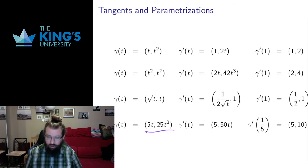Let's look at what happens to the tangent at the point one one. So the point one one is what happens at time equals one in each of these. Here it happens at time equals one fifth. But at all those points we go through the point one one we get a tangent vector. The tangent vector comes from the derivatives.